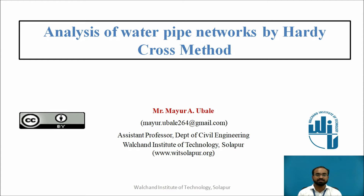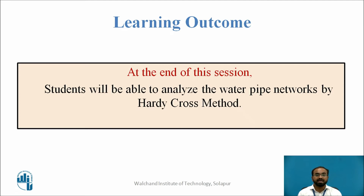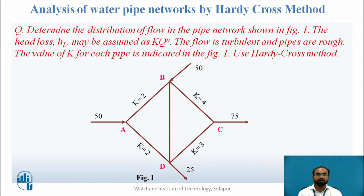So what are the learning outcomes? Students will be able to analyze the water pipeline networks by Hardy-Cross Method. Now let us have one question by which we can understand the steps required for this iteration method. Determine the distribution of flow in water pipeline networks as shown in figure. The head loss HL may be assumed as K into Q raised to N. The flow is turbulent and pipes are kind of rough. The value of K for each pipe is indicated in figure 1. Use Hardy-Cross Method.